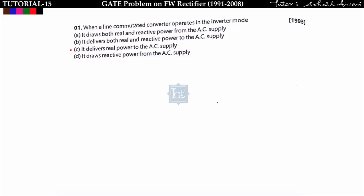The first problem was asked in 1993: when a line commutated converter operates in inverter mode, which of the following is true — it draws both real and reactive power, delivers both, delivers real power to the supply and draws reactive power, or delivers real power to the supply? Line commutated converter here means a single-phase full converter.